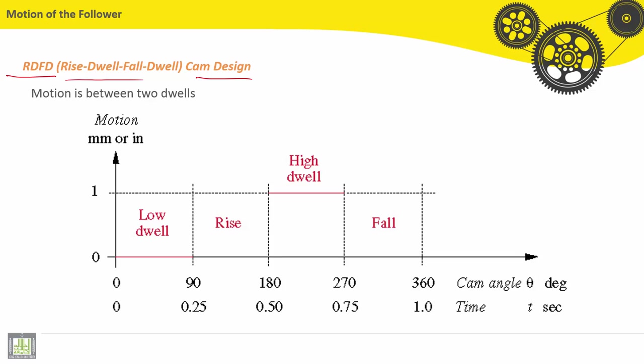Motion is between two dwells. Here we have the low dwell and the high dwell. Between the first and last, we have the rise phase and fall phase.